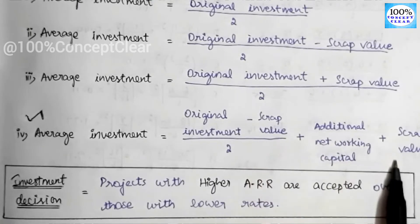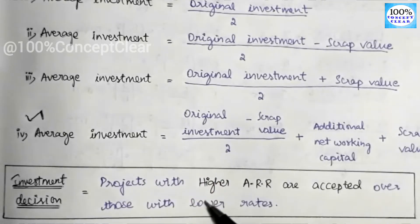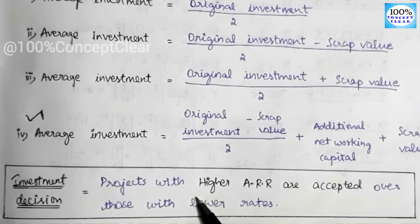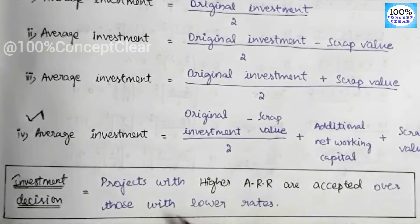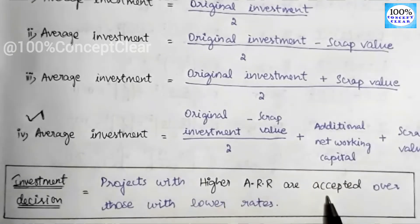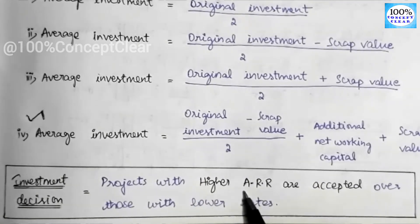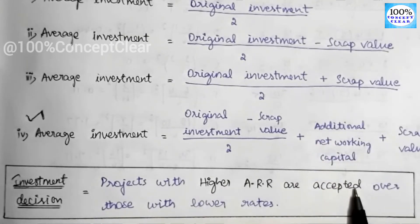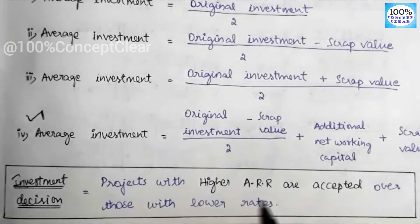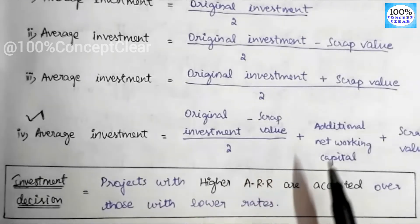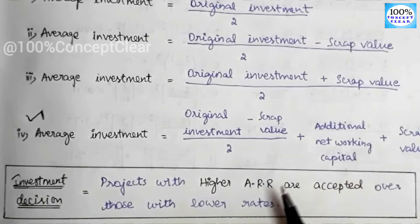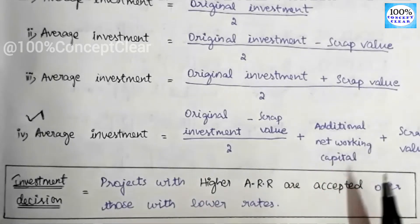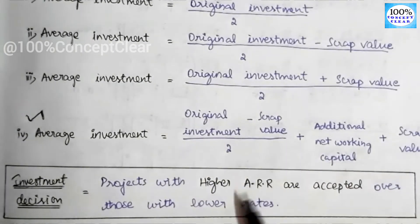Now, how do we use the ARR method for investment decisions? The accept or reject criteria is: projects with a higher ARR are accepted over those with lower rates. So if a project has a higher ARR, we accept that project. If the ARR is lower than the required rate, we reject it. In the ARR method, we accept the project with the higher accounting rate of return.